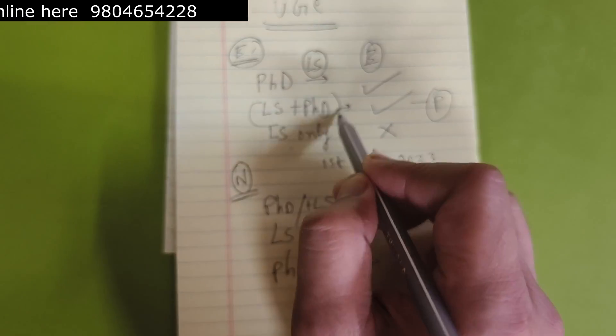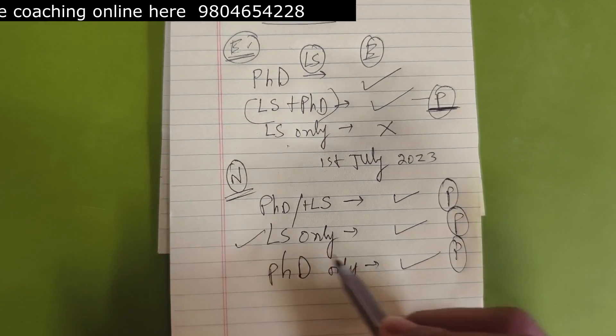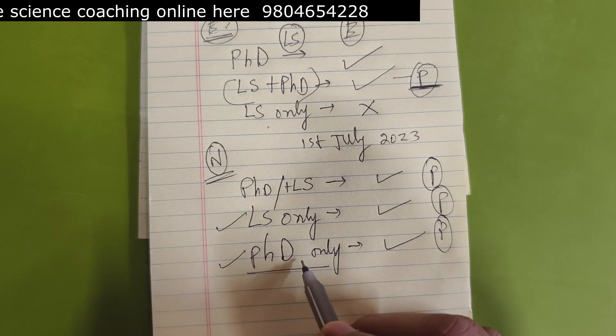So earlier, you need to have LS and PhD to become a permanent position for assistant professor. Now if you have LS only, you are eligible. If you have PhD only, you are still eligible for that.